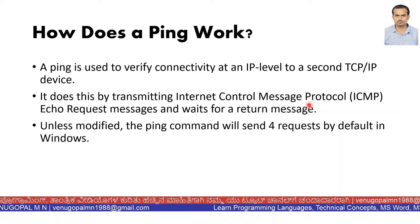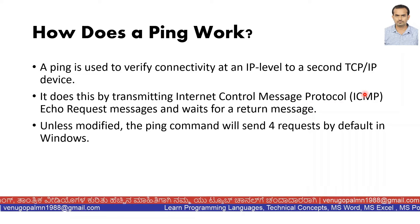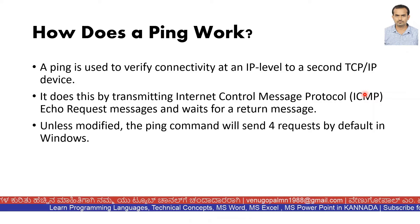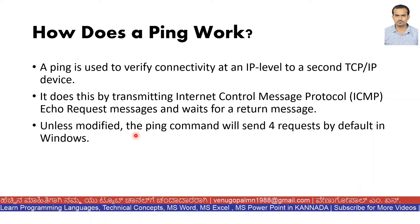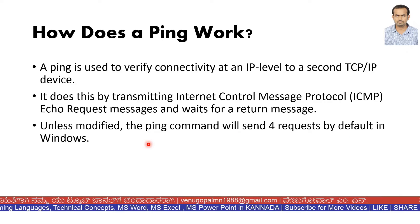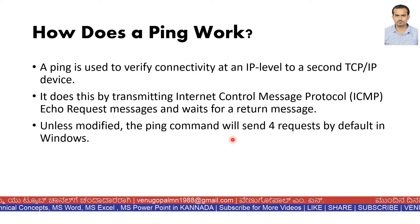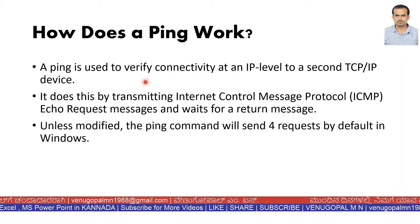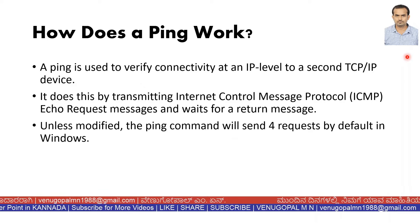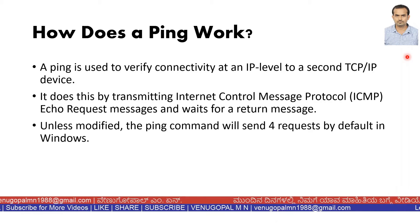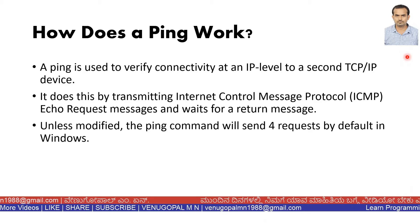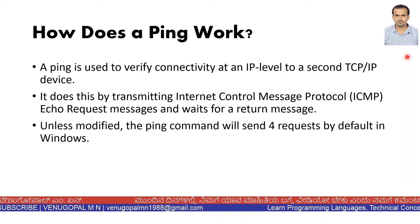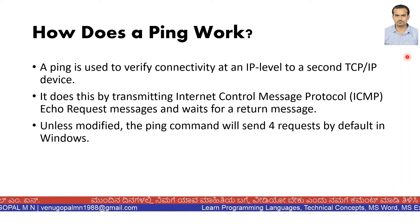It works by transmitting an Internet Control Message Protocol (ICMP) echo request and waiting for the return. It sends an echo request and calls the other server or device to reflect back. If the message comes back, the connection is established. By default, the PING command will send four requests. It is similar to a submarine's sonar or radar — if you emit sound waves, they are reflected by an object and come back.